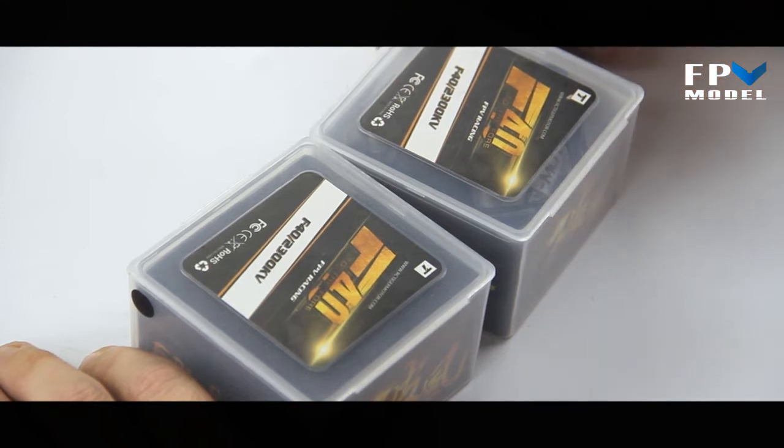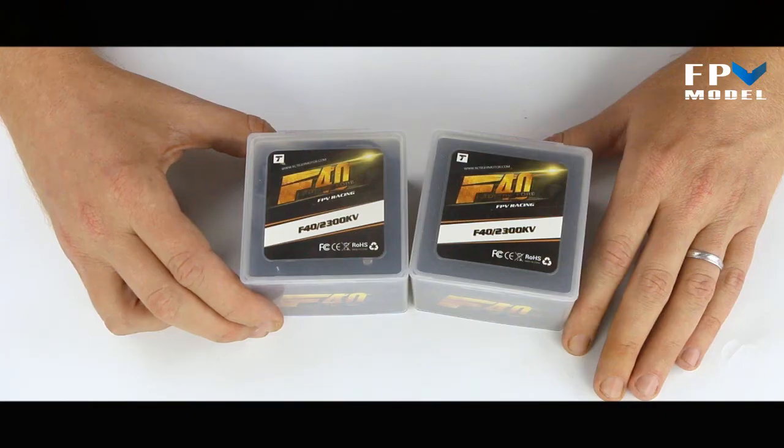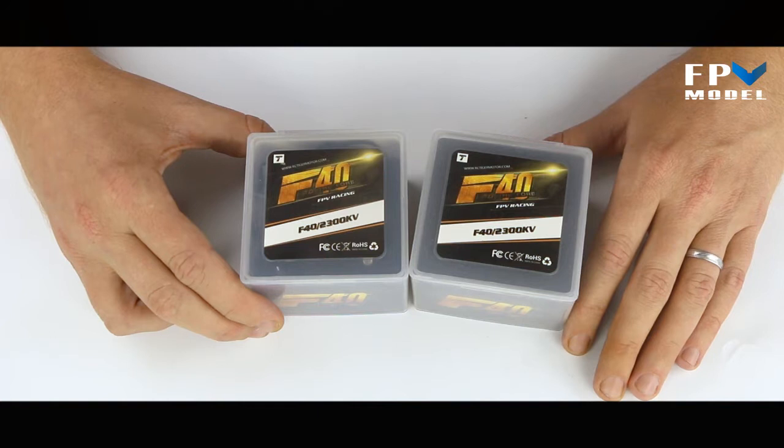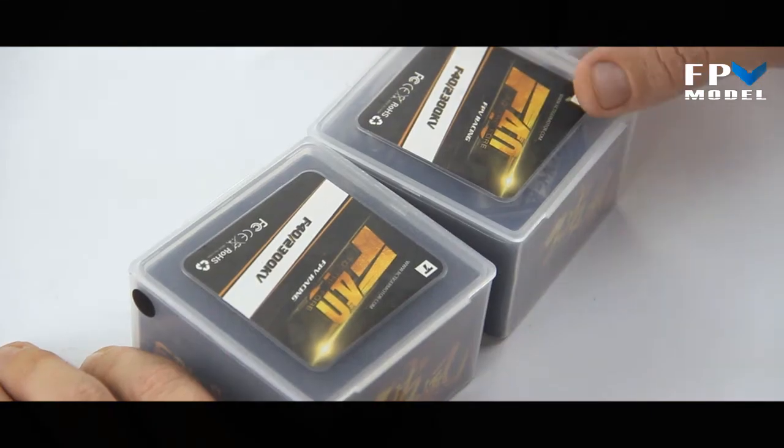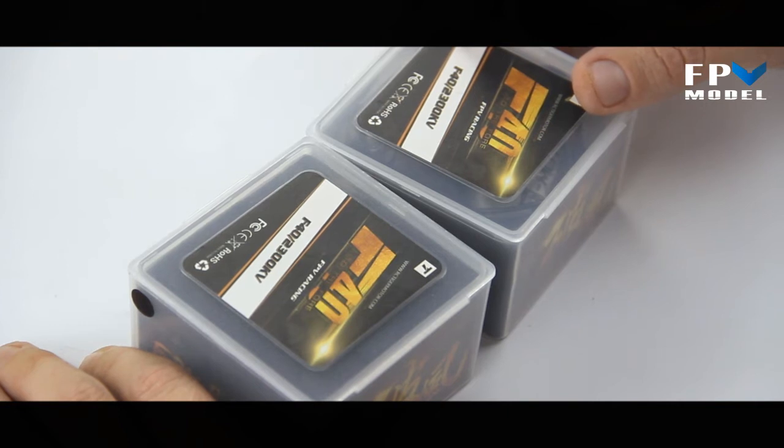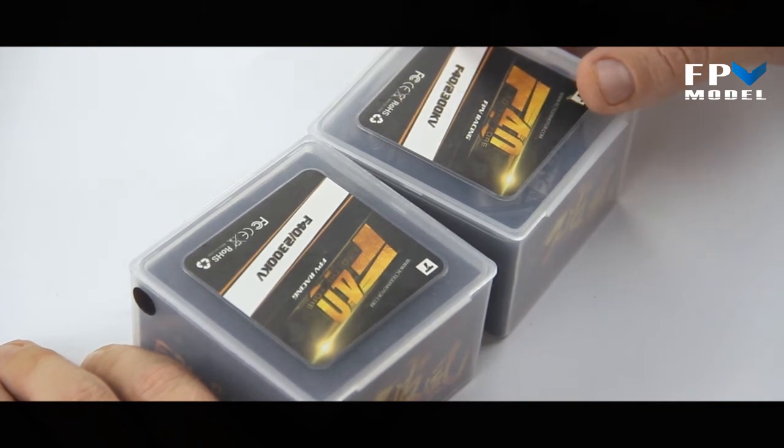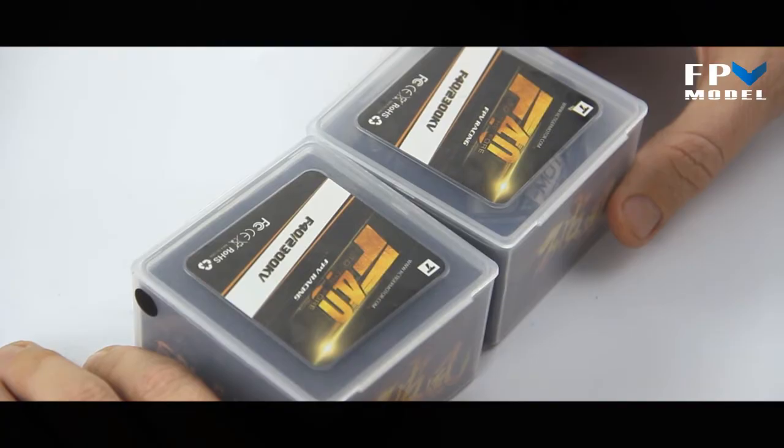For those of you that may not know, F40 just basically means 2204s, so I guess if they had 2206 they'd call them F60. But these are 2300 KV motors and it's the newest offering they have, so what we're going to do is open the box and give you a look at it.